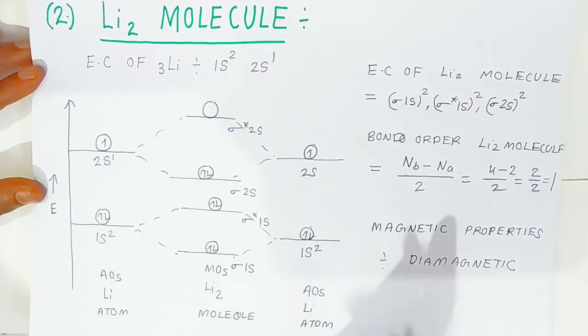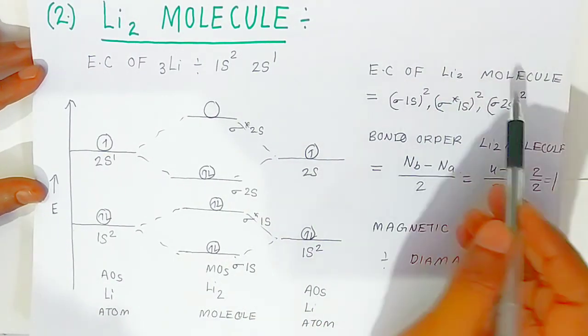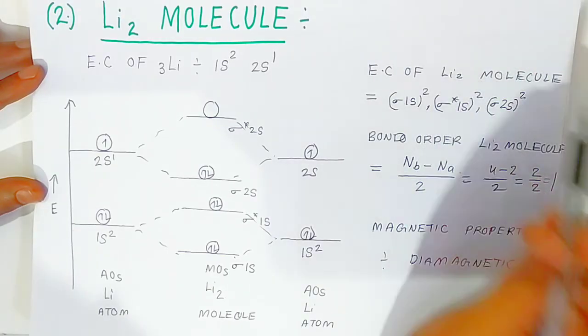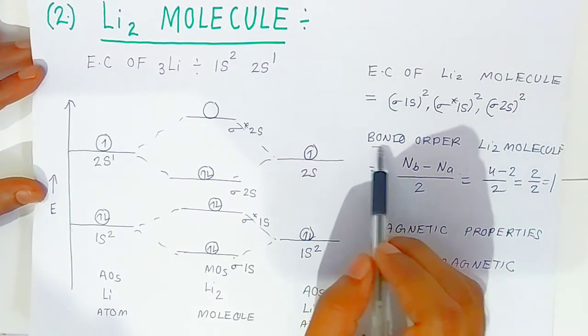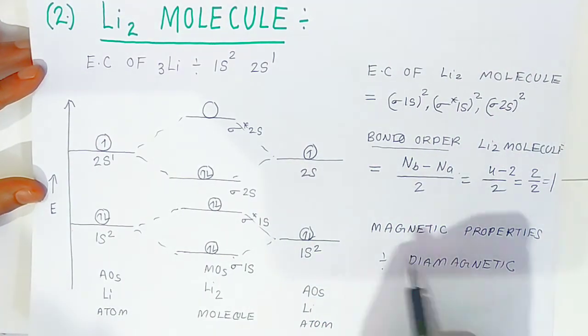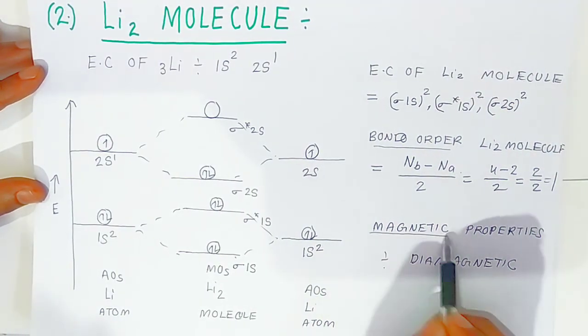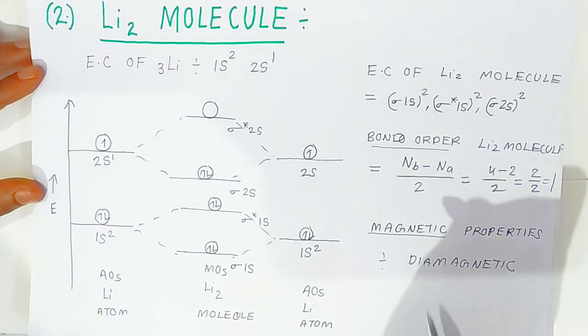So this way, students, you can explain the electronic configuration of the lithium molecule, the bond order of lithium, and its magnetic property — it is diamagnetic in nature.